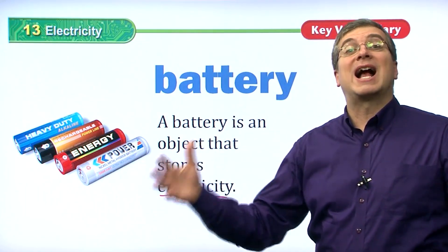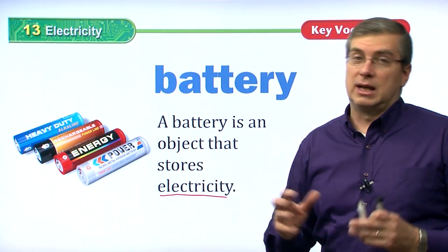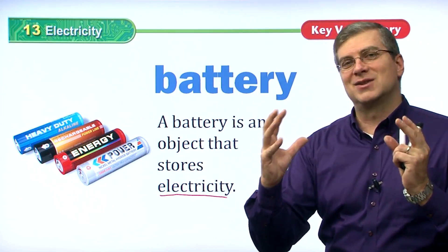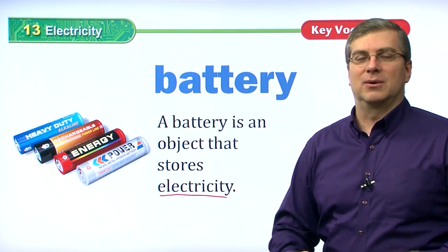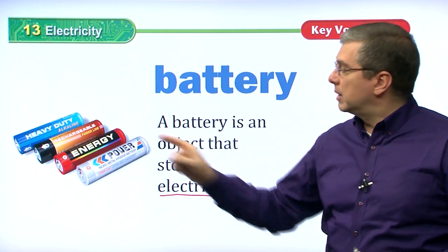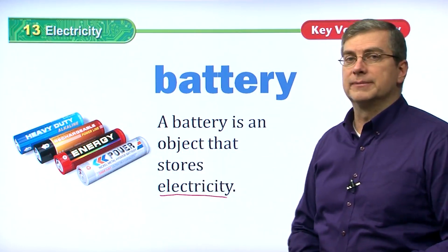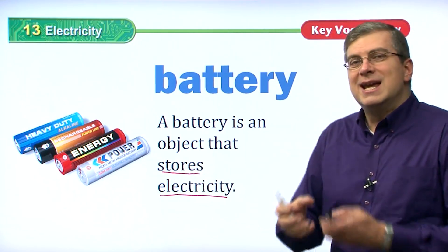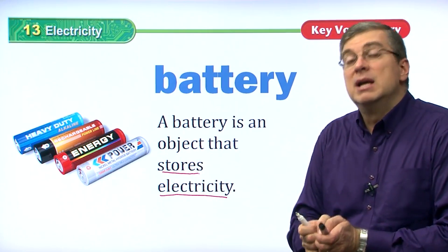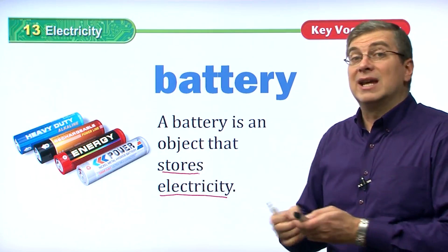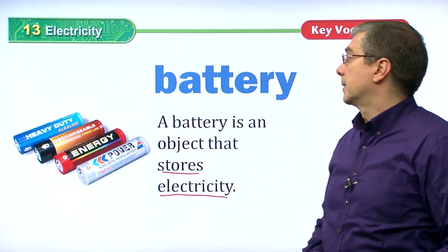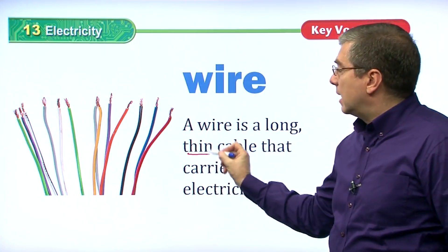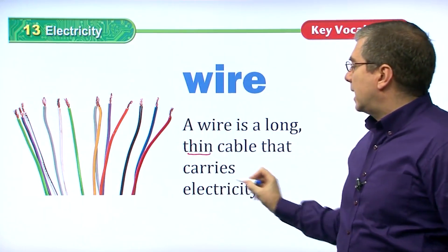There are many different kinds of batteries — lots of different shapes and sizes. In your mom or dad's car there's a really big battery to get the engine going. In your cell phone there's a smaller battery. Batteries store electricity and keep it inside them, so when you need electricity you can use it and carry it with you.